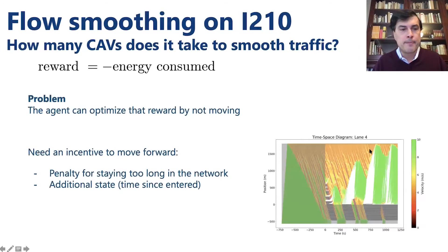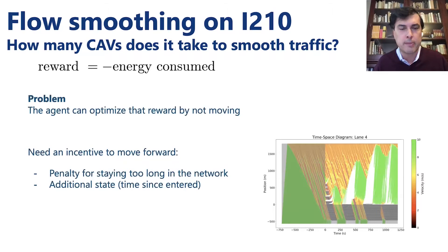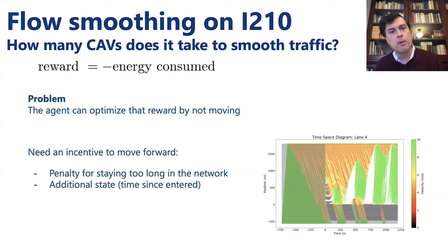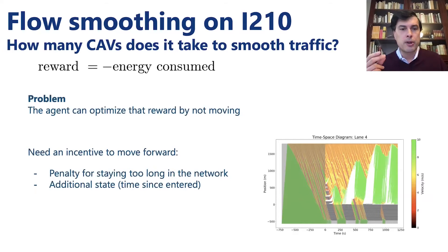When shaping the reward for an RL algorithm, you have to be careful. You want to reward energy savings, but there's a trivial solution: stop all vehicles, get zero energy, and that's optimal — but obviously not what you want. So there's a lot of experimental algorithmic design needed in understanding how to integrate constraints like maintaining constant throughput and ensuring vehicles don't stop. There's not much theory, it's more about devising a reward function that doesn't produce pathological behavior.